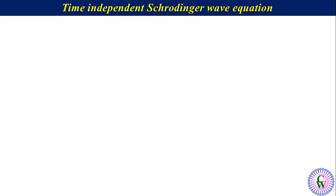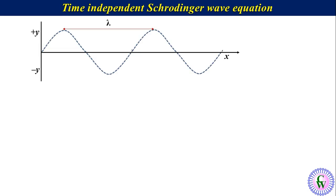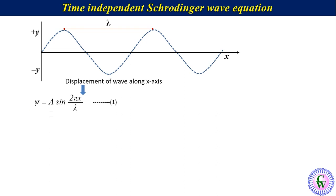Consider a stationary wave associated with a particle of mass m traveling in the x direction. The wave equation for the wave associated with this particle can be written as psi is equal to A sin(2πx/λ), labeled equation number 1. Where psi is the wave function, A is the amplitude, x is displacement along the x axis, and λ is the wavelength.